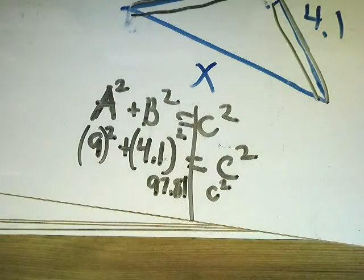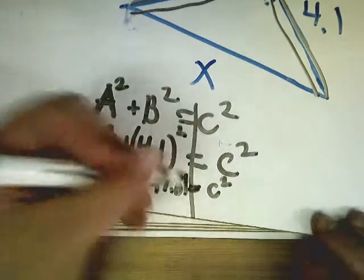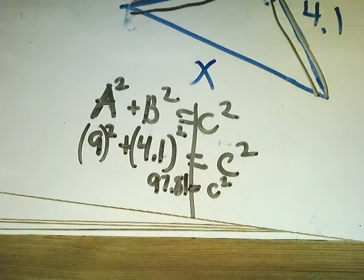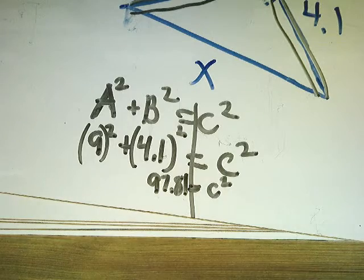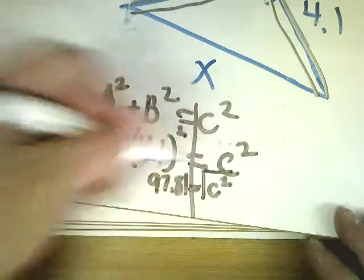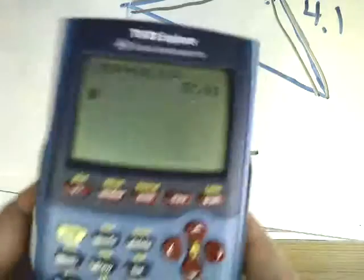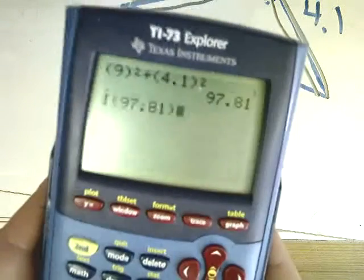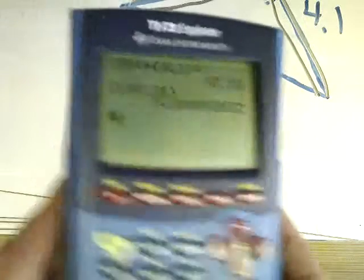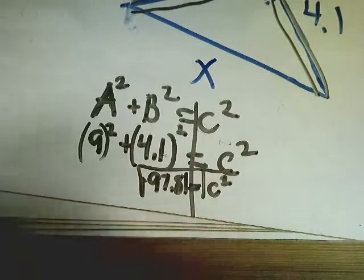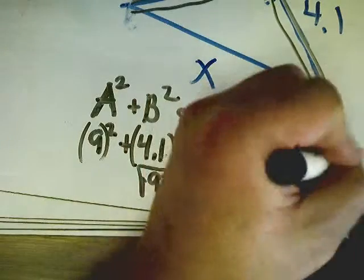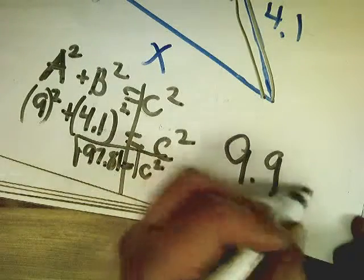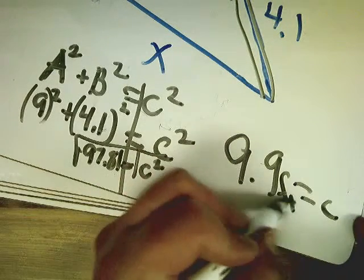So 9 squared plus 4.1 squared equals 97.81. Now, I've got C squared equals 97.81. And all I have to do is get C all by itself. In this case, to get rid of the square, I'm going to do square root. So I'm going to go back in, type in square root of 97.81, and get 9.9. And maybe they want a unit in there, so I'll throw feet in there for you.